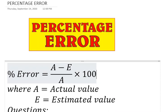As you can see on the screen, percentage error indicates how big our errors are when we measure something in an analysis process. It is worthy to note that smaller percent error indicates that we are close to the accepted or original value. For example, a 1% error indicates that we got very close to the accepted value. But if you have like 48% error, it indicates that we are quite a long way off from the true value.